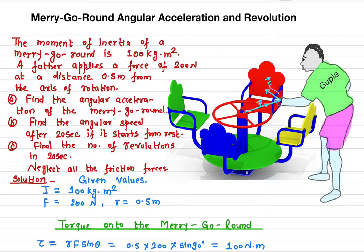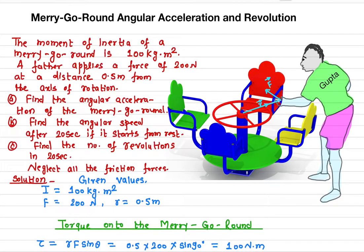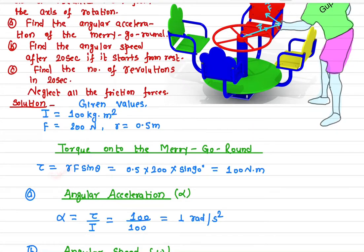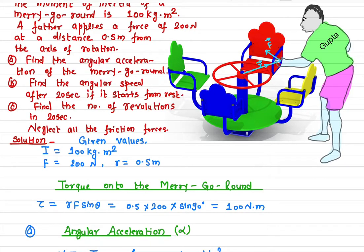Once you know the force and the distance from the axis of rotation, we can find the torque acting on the merry-go-round. In rotational dynamics, torque makes objects rotate about an axis. Torque is a vector quantity; its magnitude is given by rF sinθ, where torque equals r cross F vector.